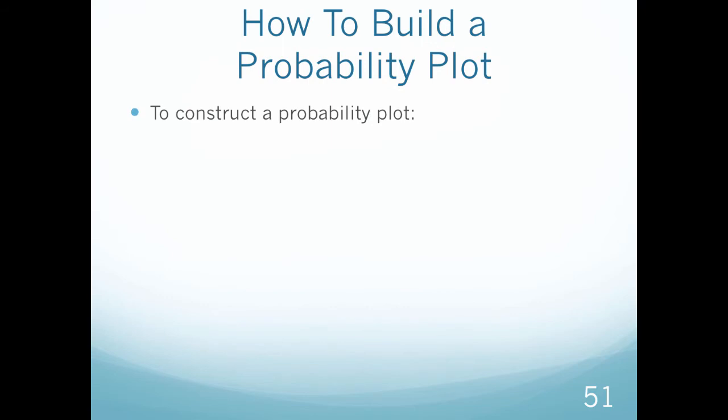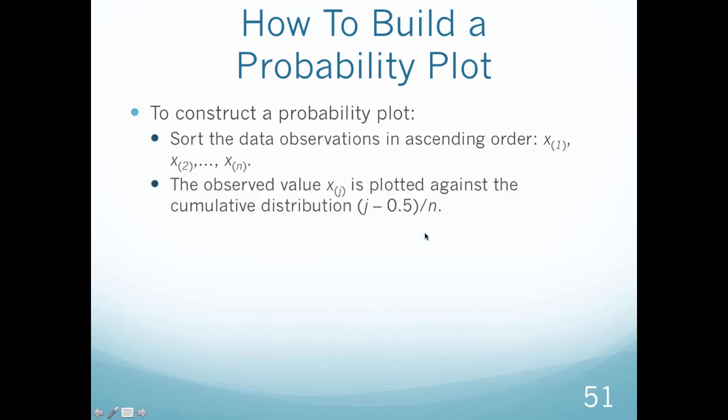So the way we create a probability plot is, first of all, we sort the data observations in ascending order, so the smallest number to the biggest number. Then we put the observed value i sub j plotted against the cumulative distribution. And this then is how we would come up with the cumulative distribution.